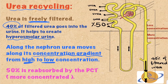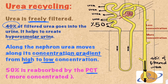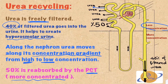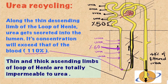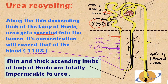The second mechanism in creating the corticopapillary osmotic gradient is urea recycling. Urea is freely filtered, and 40% of filtered urea goes into the urine, helping create hyperosmolar urine. Along the nephron, urea moves from areas of high concentration to low concentration along its gradient without active transport. 50% of filtered urea is reabsorbed by the proximal convoluted tubule — because urea concentration inside the tubular lumen is higher than outside — and this decreases the urea concentration of fluid entering the loop of Henle.